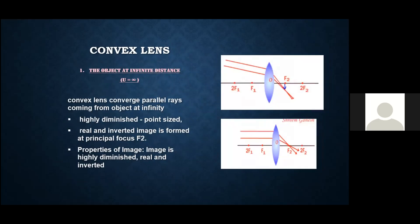First, if the object is at infinite distance, you can see there are two rays — one is parallel to the principal axis, and one is not parallel to the principal axis. Here the object is at infinity. The incident rays are always parallel to each other. When the rays are parallel to the principal axis, the image is formed at the principal focus.